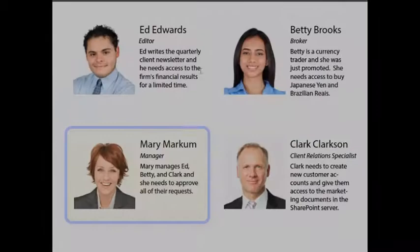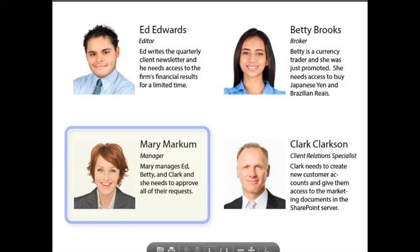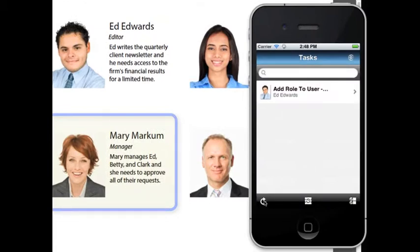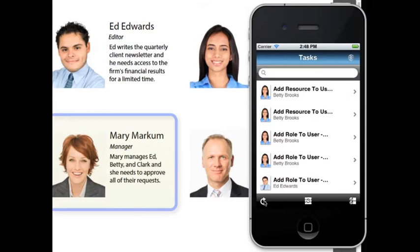For approval, we turn to Mary. Mary's the manager of Ed, Betty, and Clark, who we'll talk about in a moment. Mary's always in meetings and she's not often at her desk, but she does always have her phone with her, so Mary lives in the mobile app NetIQ Identity Approvals. Mary takes a look at her task list on the mobile app and in come the requests from Ed and Betty.